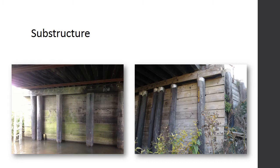Substructures can take on many forms; however, for timber slab and girder bridges, one of the more common configurations is made up of timber piles, timber pile caps, and timber back walls and wing walls. The piling are typically Douglas fir or southern yellow pine, treated with creosote.